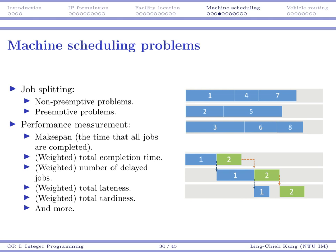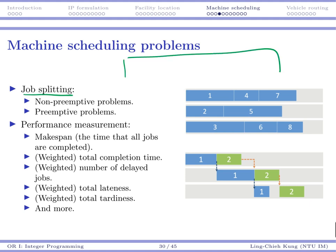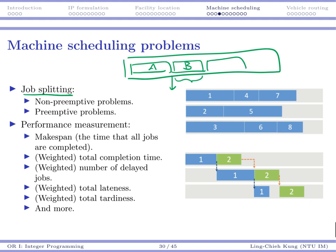We may also determine whether a job may be split or not. If a job cannot be split, once you start it you need to finish it before doing the next job. But sometimes what is allowed is that you start job A, then because job B is more urgent, you stop job A and complete job B first, then resume job A. If that's the case, we say we are talking about a preemptive problem — you allow preemption. If you do not allow preemption, once you start job A, you must finish it.